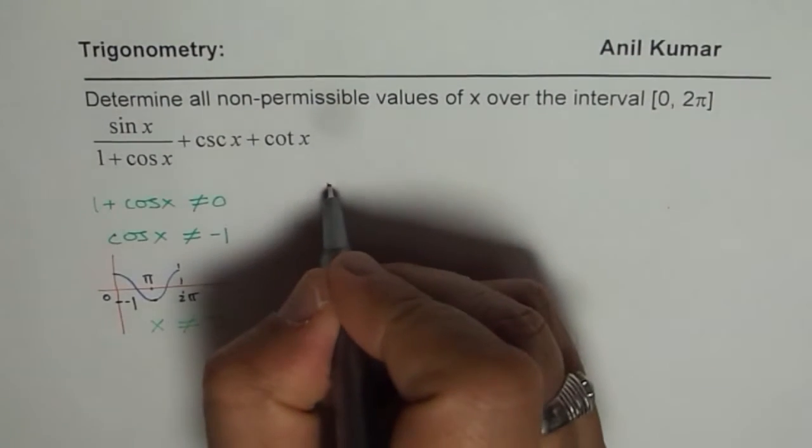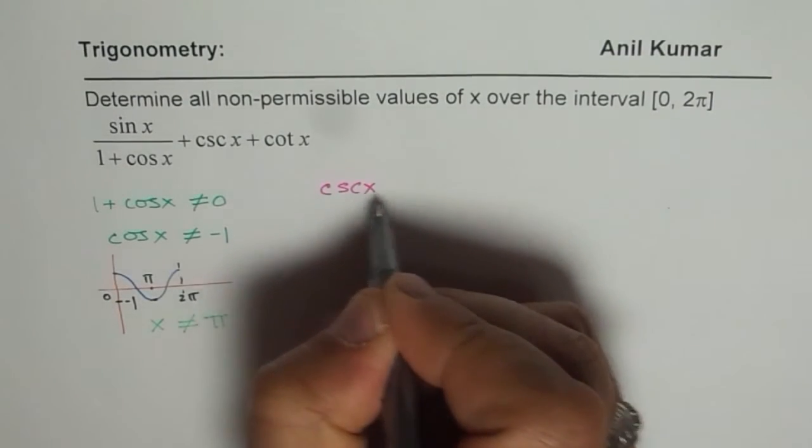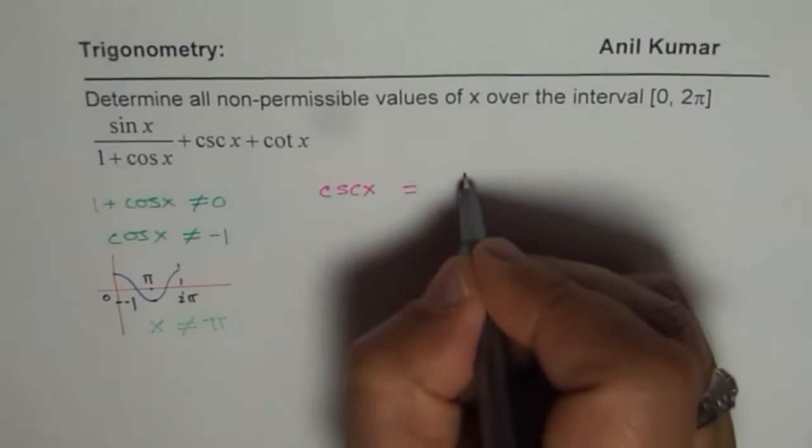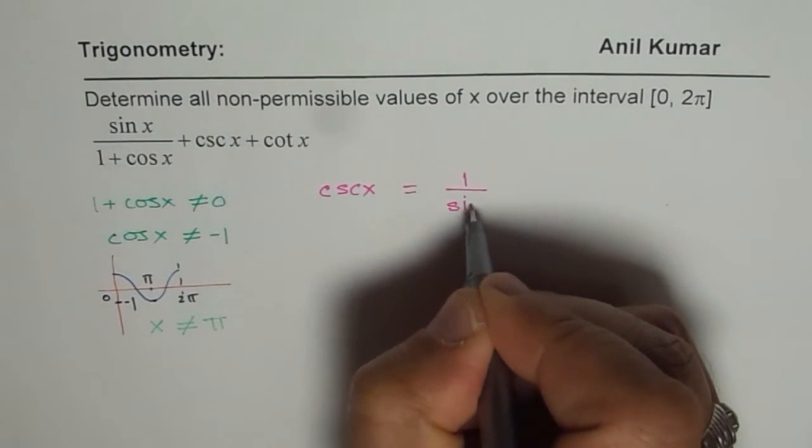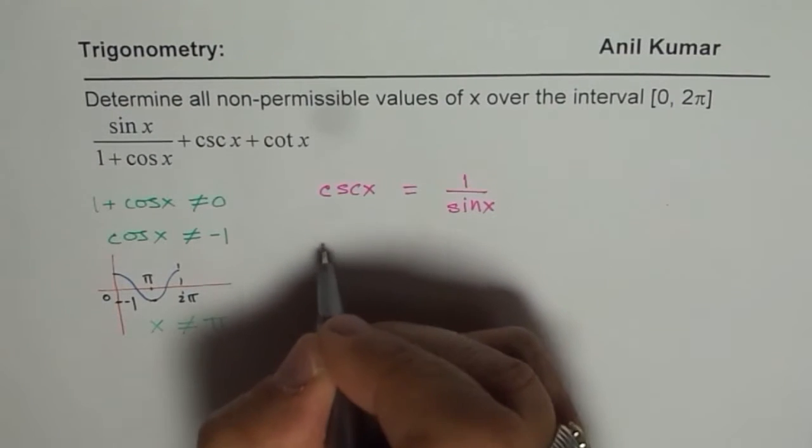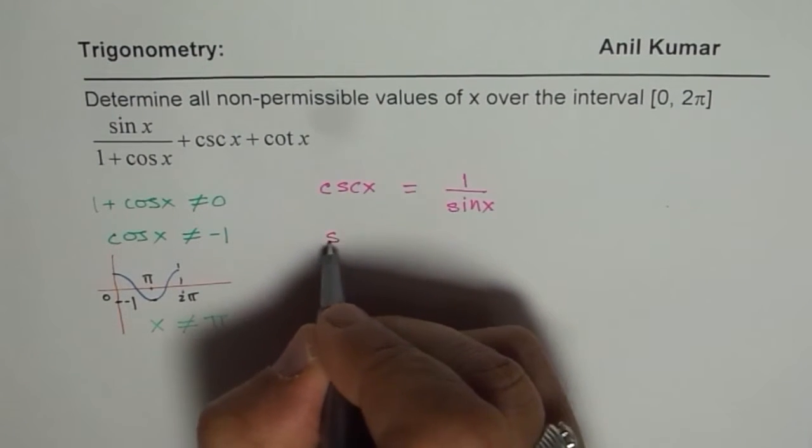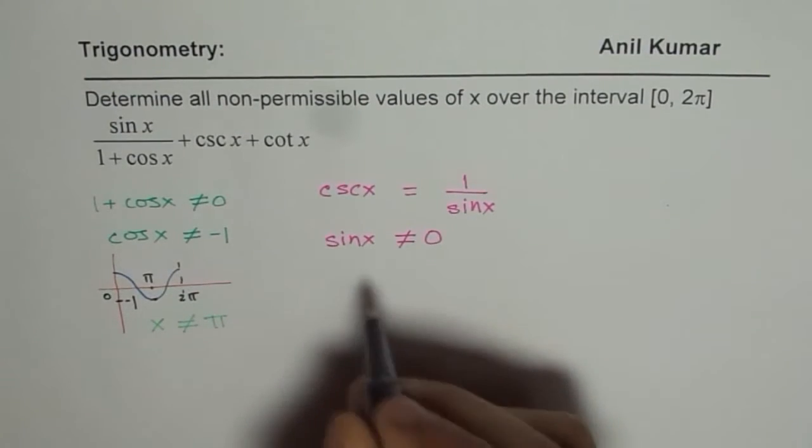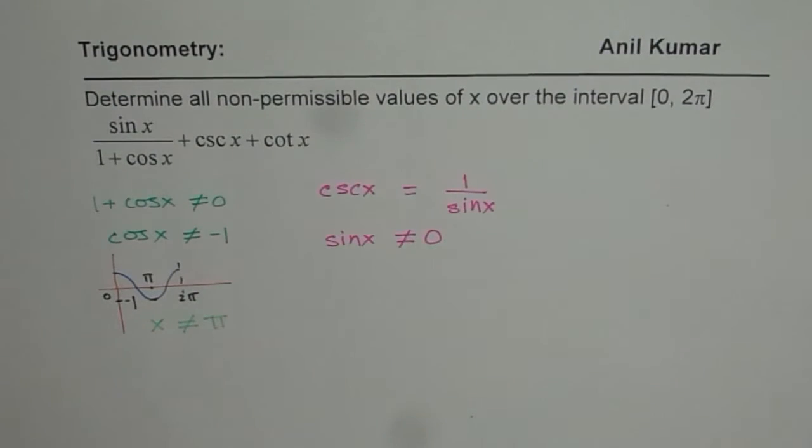Let us now look into the other parts. Cosecant x. Now, cosecant x is a trigonometric ratio which is reciprocal of sine. So we could write this as 1 over sine x. Now that means that sine x is now in the denominator. So we say sine x should not be equal to 0. Now when is sine x equals to 0?